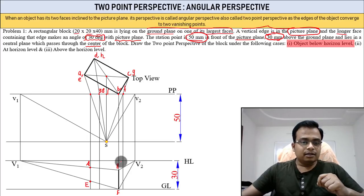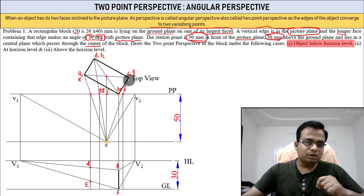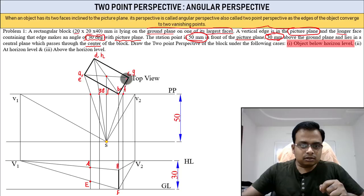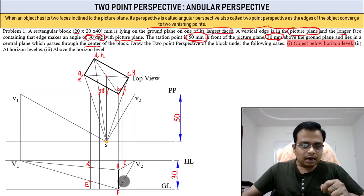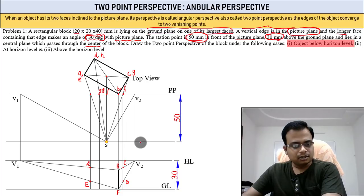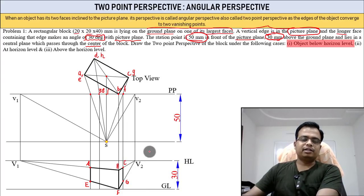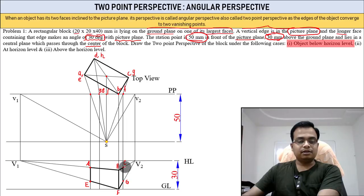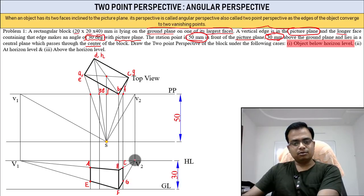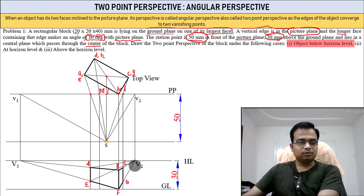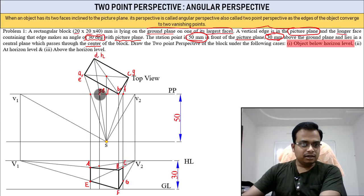There's also a vertical edge here — when viewed from the front it gets narrower — so C is at the top and G is at the bottom. Now it's become easy. This is A, B, C — and there is a point D somewhere. Join A with V2, or C with V1, G with V1, or E with V2 to locate D and H.